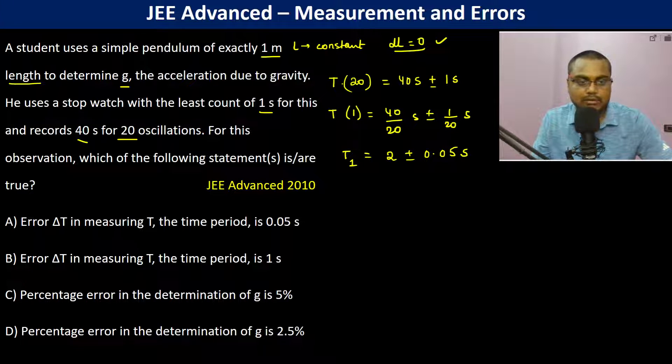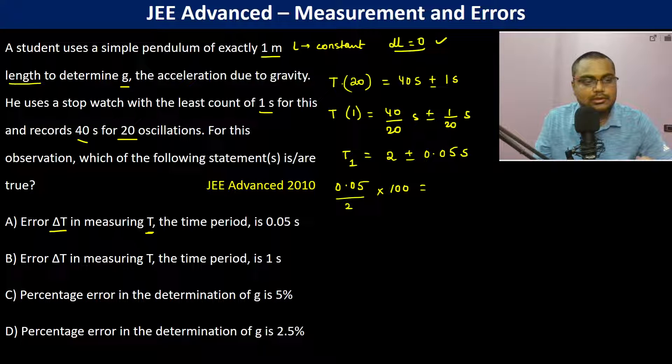For this observation, which of the following statements is correct? Error ΔT in measuring the time period is... the error is going to be 0.05 by 2 into 100.